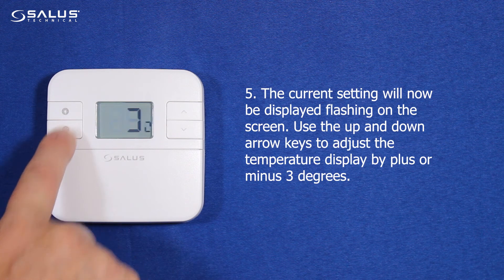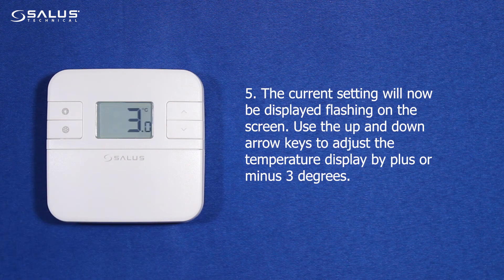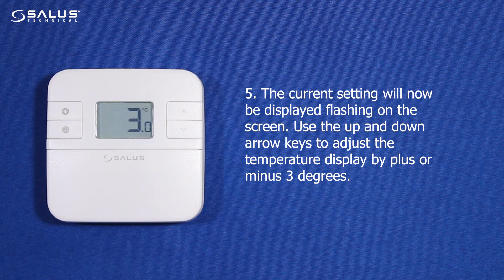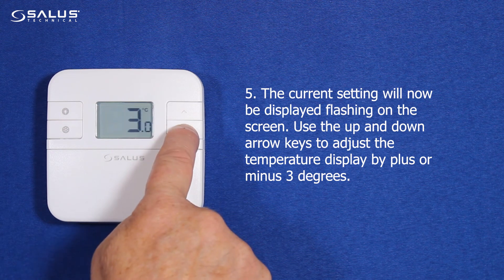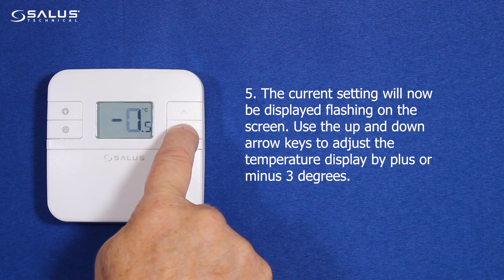Step 5: The current setting will now be displayed flashing on the screen. Use the up and down arrow keys to adjust the temperature display by plus or minus 3 degrees.